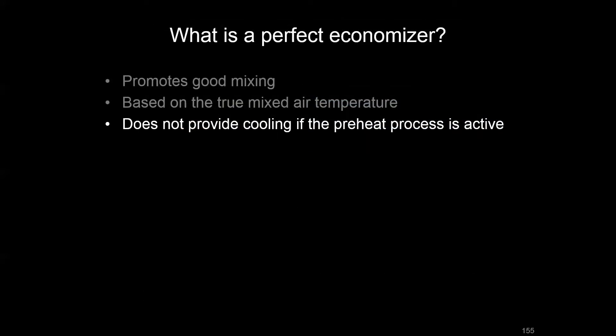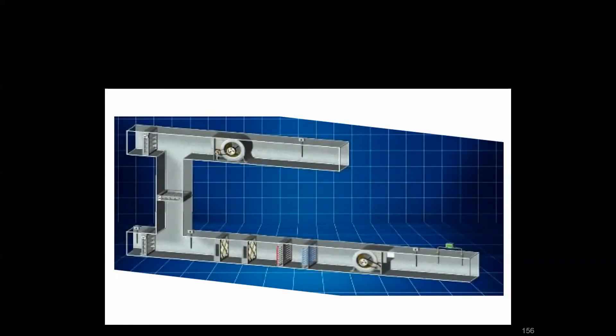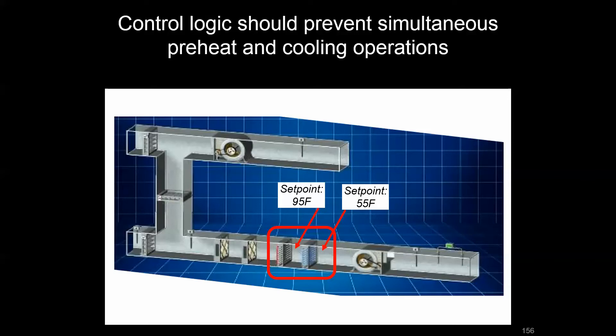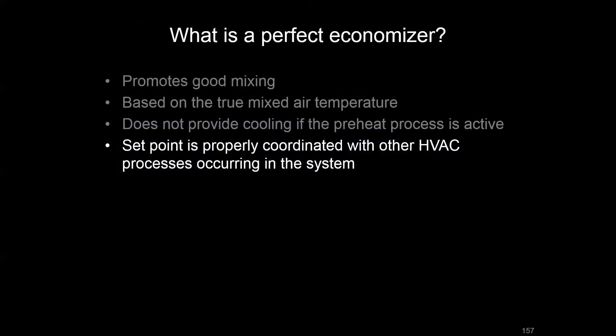We'd also want to make sure that a preheat coil and a cooling coil aren't fighting each other. In this air handler, we might have a preheat coil set point of 95 degrees and a cooling coil set point of 55 degrees. We need control logic that tells the preheat coil to pursue 95 under specific conditions and the cooling coil to target 55 under separate conditions. Watch out for competing control loops.